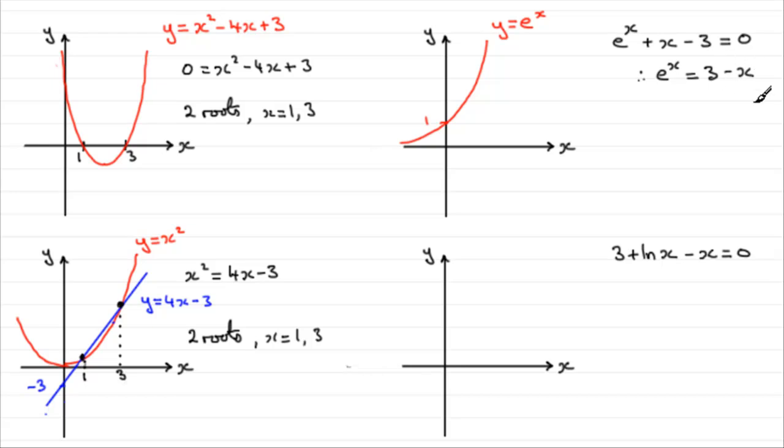And what about y equals 3 minus x? Well, that is a straight line graph, passes through the y-axis at 3, and it's got a negative gradient, a gradient of negative 1. So it's going to be up here at 3, coming downwards like so. This is the graph of y equals 3 minus x.